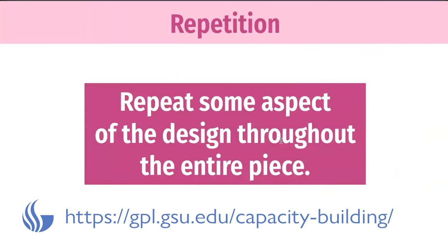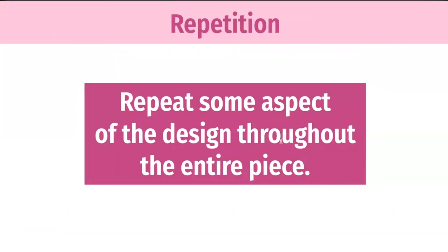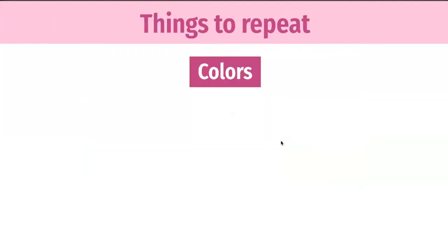Let's look at Repetition next — the R in CRAP. This idea is fairly simple: repeat something throughout the entire piece. If you have a whole bunch of headings in your document, make sure all the headings are the same. Don't have one be a sans-serif heading and the next be a different sans-serif heading — just use the same one. It helps tie the whole document together. If you have a layout with text in one area and images in another, keep repeating that throughout the document, or do minor variations like mirroring it.